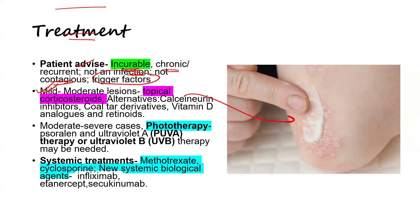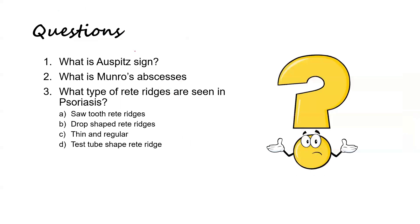For moderate to severe cases, phototherapy can be used, which involves PUVA and UVB. Systemic treatments include methotrexate, cyclosporine, and newer systemic biological agents that target the specific inflammatory pathways causing the disease.